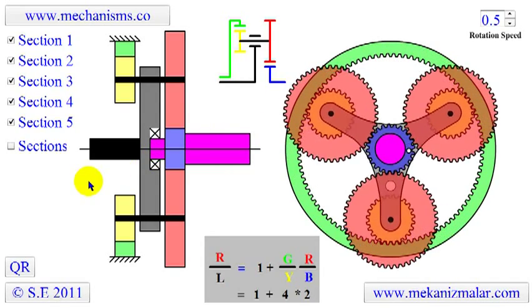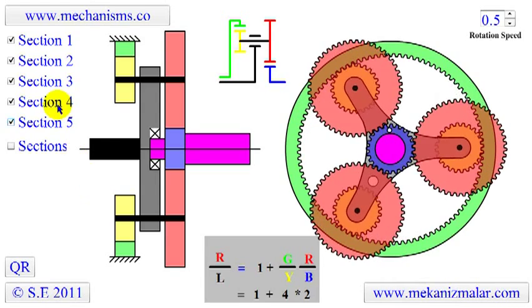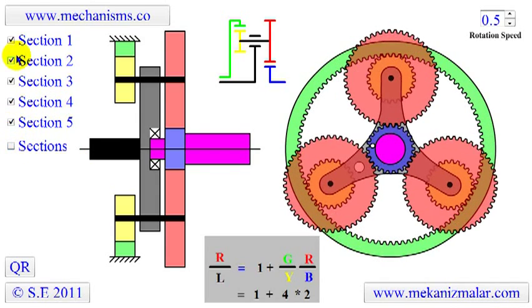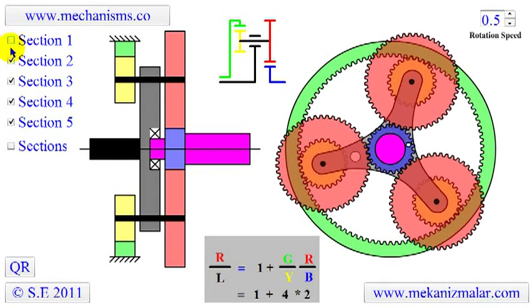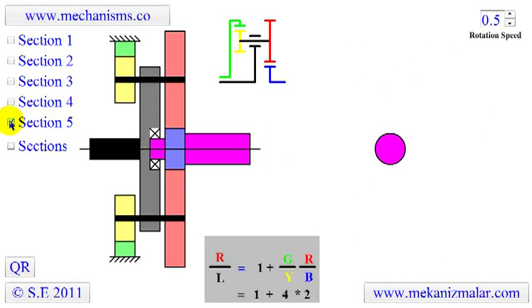Notice that this planetary gear is made up of five sections. First, let's turn off all the section selectors. Now, let's turn them on one section at a time.